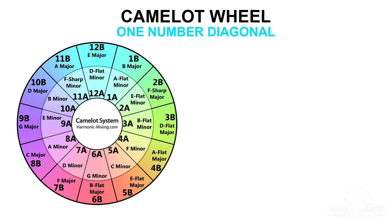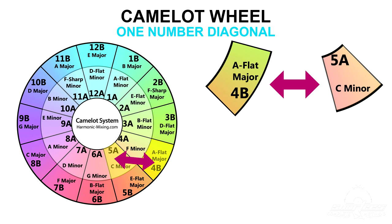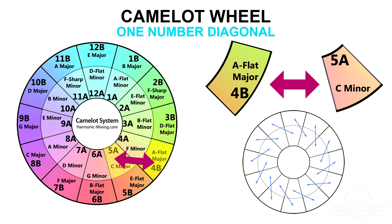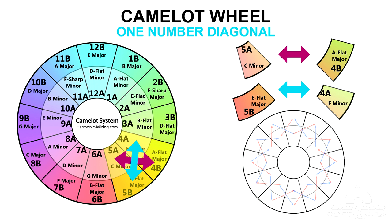Another interesting trick is to mix diagonally one key code to the right or to the left. For example, you can try going from 4B into 5A or 5A into 4B. Just like moving to the right or left in the same ring of the wheel, it has the potential to sound good because the individual notes of the two keys are harmonically related — out of the seven-note scale, they share six of the same notes with only one note difference between them. Now some DJs swear that this technique only works two ways: going clockwise from the outer ring to the inner ring, such as 4B into 5A, or going counterclockwise from the inner ring to the outer ring, such as 5A into 4B.